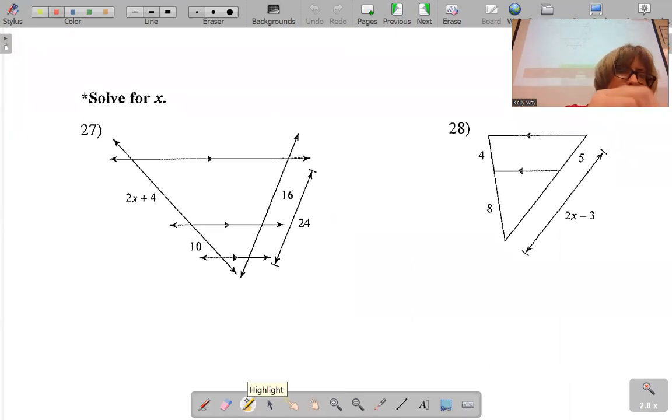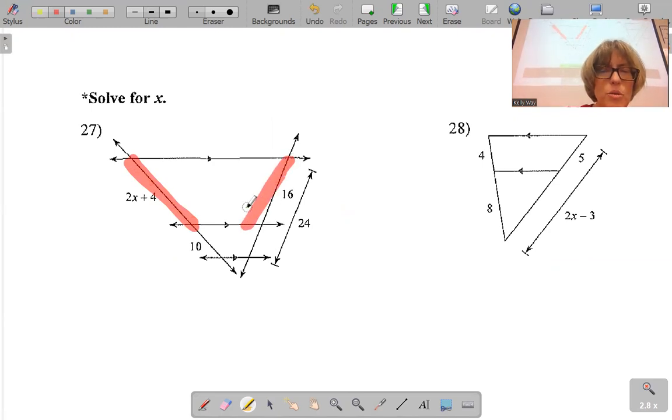Again, match and mirror. So that two X plus four matches with 16. This 10 matches with right there. There's nothing there, but if you look very carefully, if you trace this out, this is 24, 16. You should easily be able to find that to get what you're looking for.